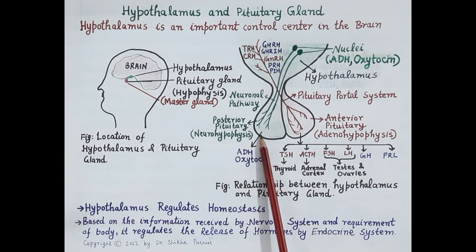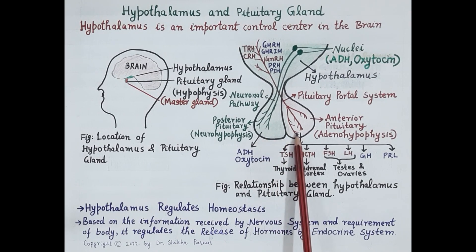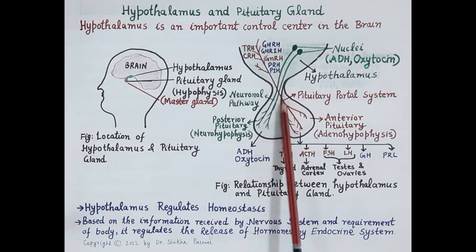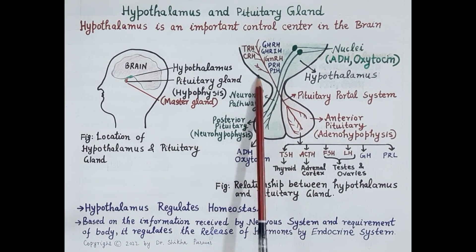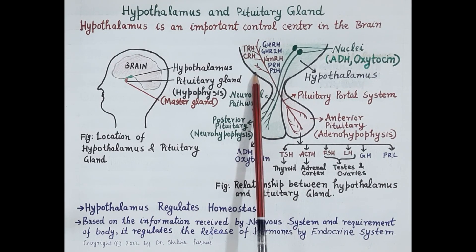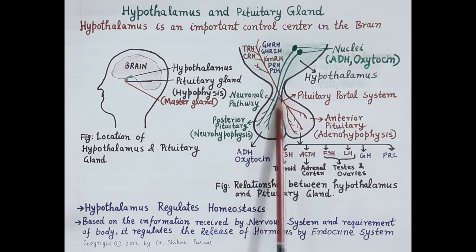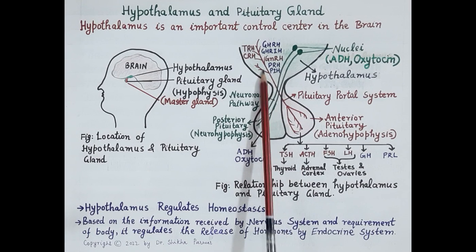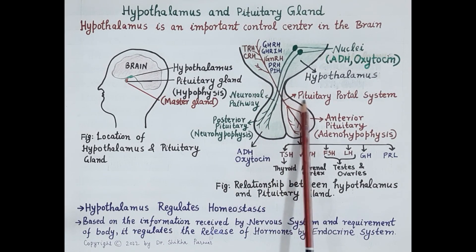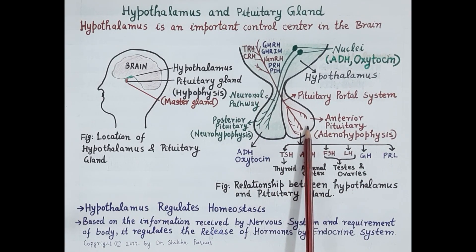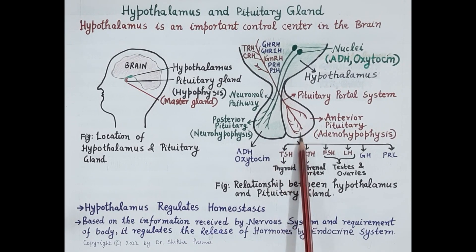Unlike posterior pituitary, which is made up of nervous tissue, anterior pituitary is made up of glandular tissue and is connected to the hypothalamus by a network of blood capillaries. As per the requirement of the body and nerve impulses received by hypothalamus, hypothalamus triggers release of required regulatory hormones. These hormones are sent to anterior pituitary by a network of capillaries called the pituitary portal system. These regulatory hormones regulate release of hormones by the anterior pituitary.